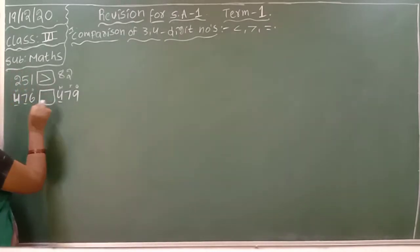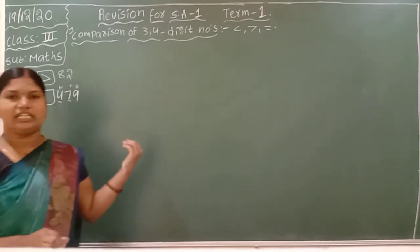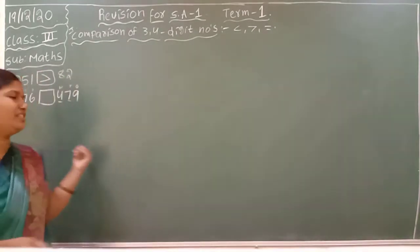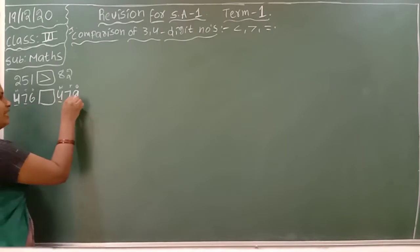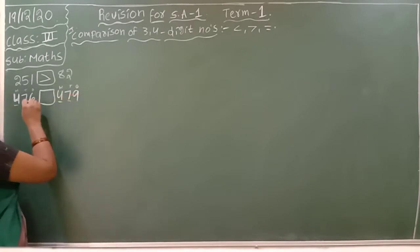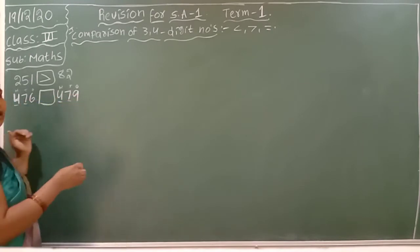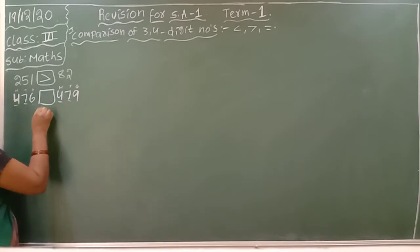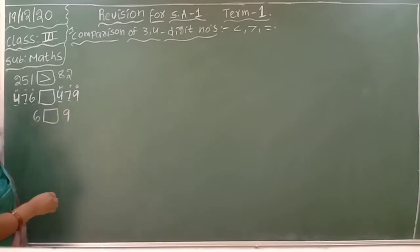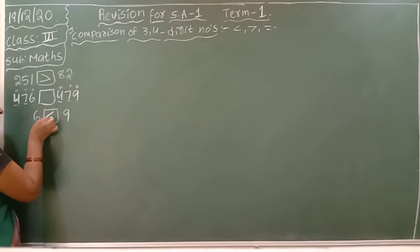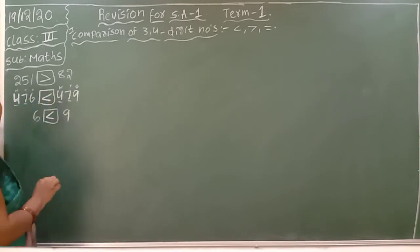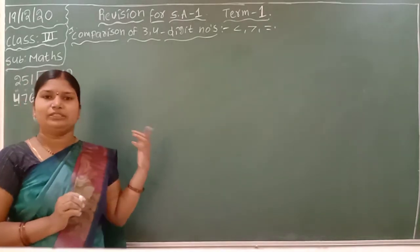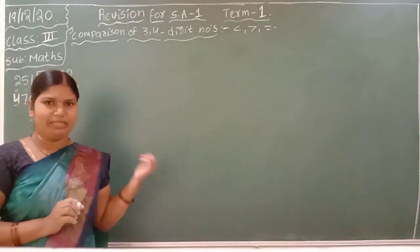That is 10s: 7 and 7 — also same. Go for the next number, that is the 1s place: 6 and 9. Compare 6 and 9 — which is the big number? 9 is the big number. Big number side open, small number side close. Like this way you have to keep the symbols.